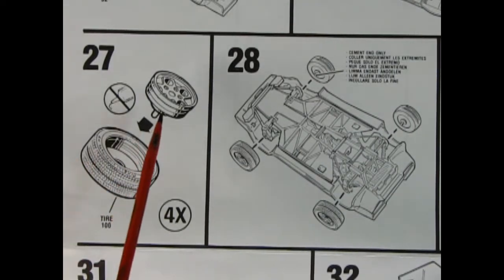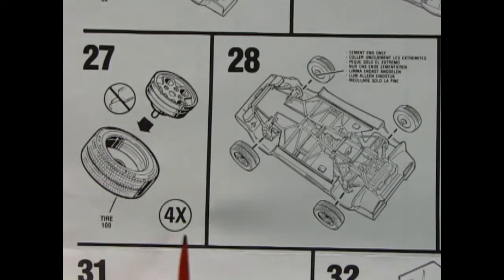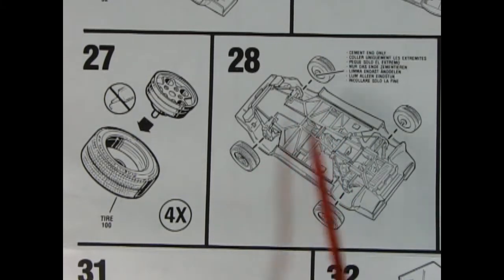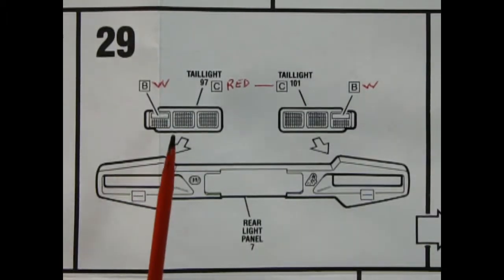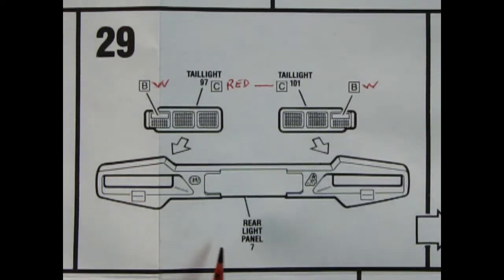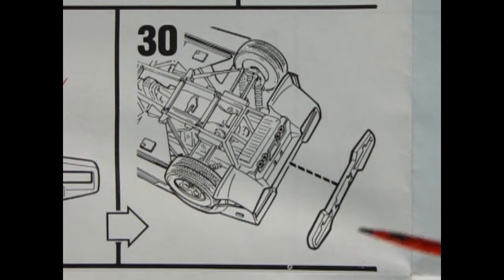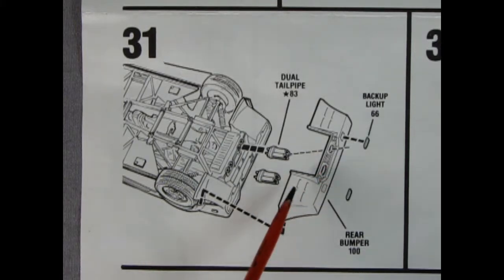Panel 27 shows our completed wheel being dropped into that nice Pirelli tire and you've got to make up four of these. And then in panel 29 it shows how those wheels and tires get glued onto the chassis. Panel 29 shows you how to paint your red tail lights in the back here and then shows you where they drop in in the rear light panel. Here in panel 30 we see that panel being glued onto the back of the car. Panel 31 shows the rear bumper and our backup lights being glued in place and then our dual tailpipes which go in.